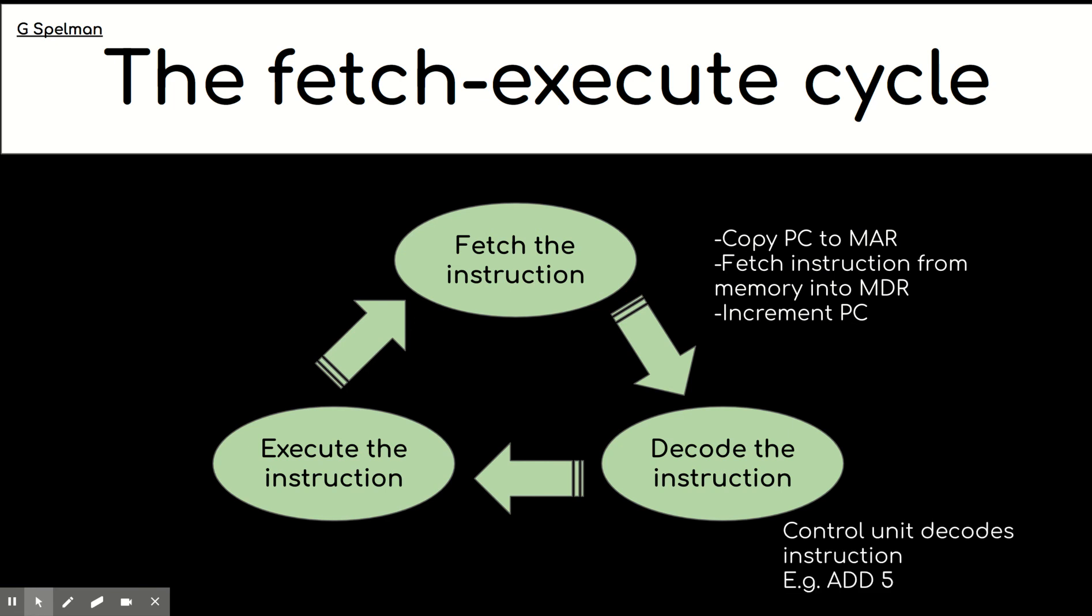Then we go to the decode phase of the cycle, and the control unit decodes the instruction. It works out what am I supposed to be doing with this instruction. So an example would be add five. It would work out, oh, so we've got to get whatever value is in location five and add it to the accumulator.